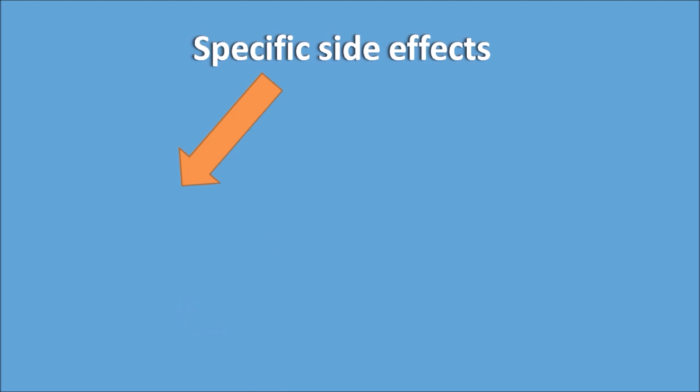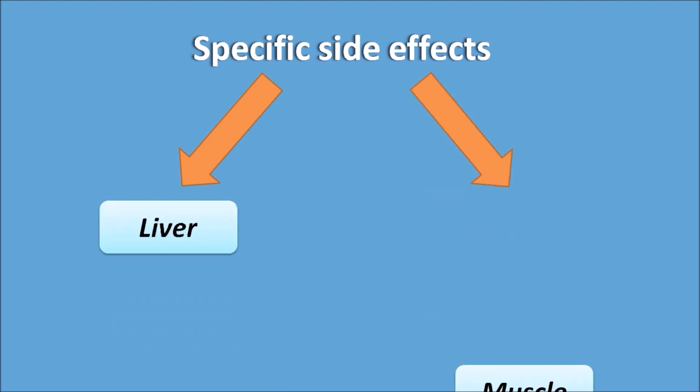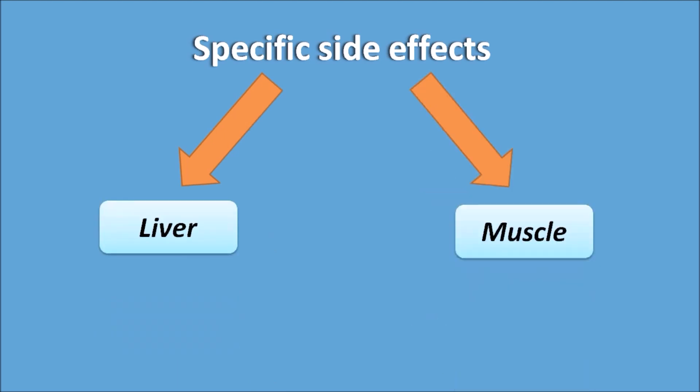But what are the specific side effects of statins? Statins mainly affect two important organs: one is the liver and the second one is the muscle. Now let us see what effects statins have on the liver and muscle on long-term treatment.